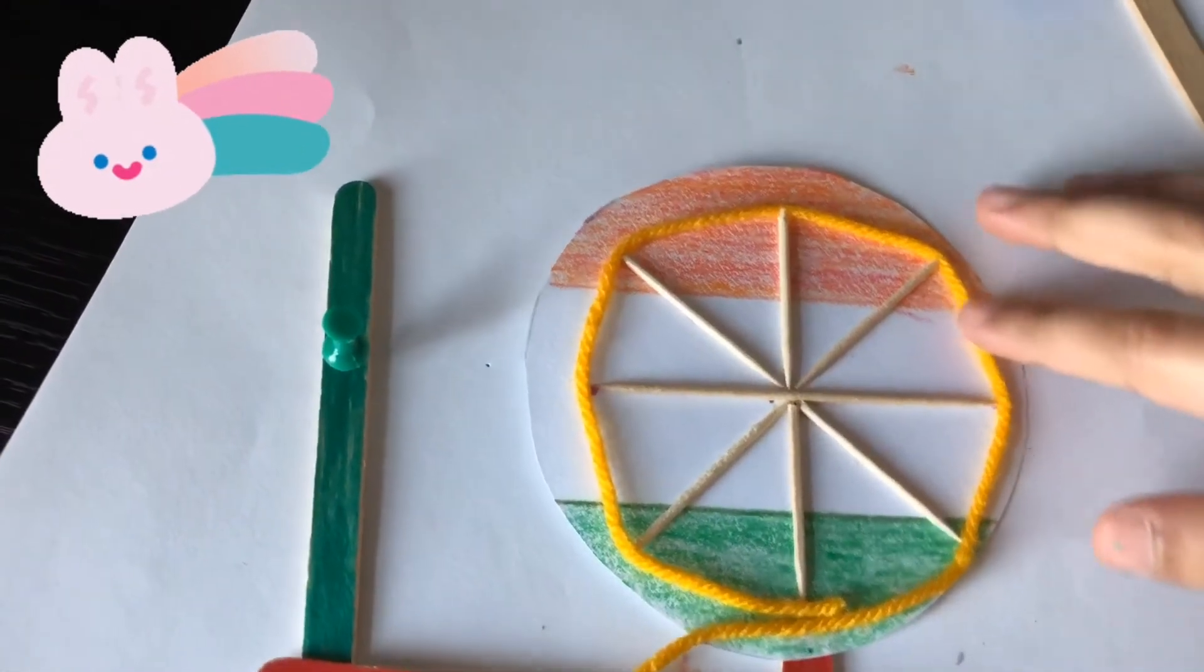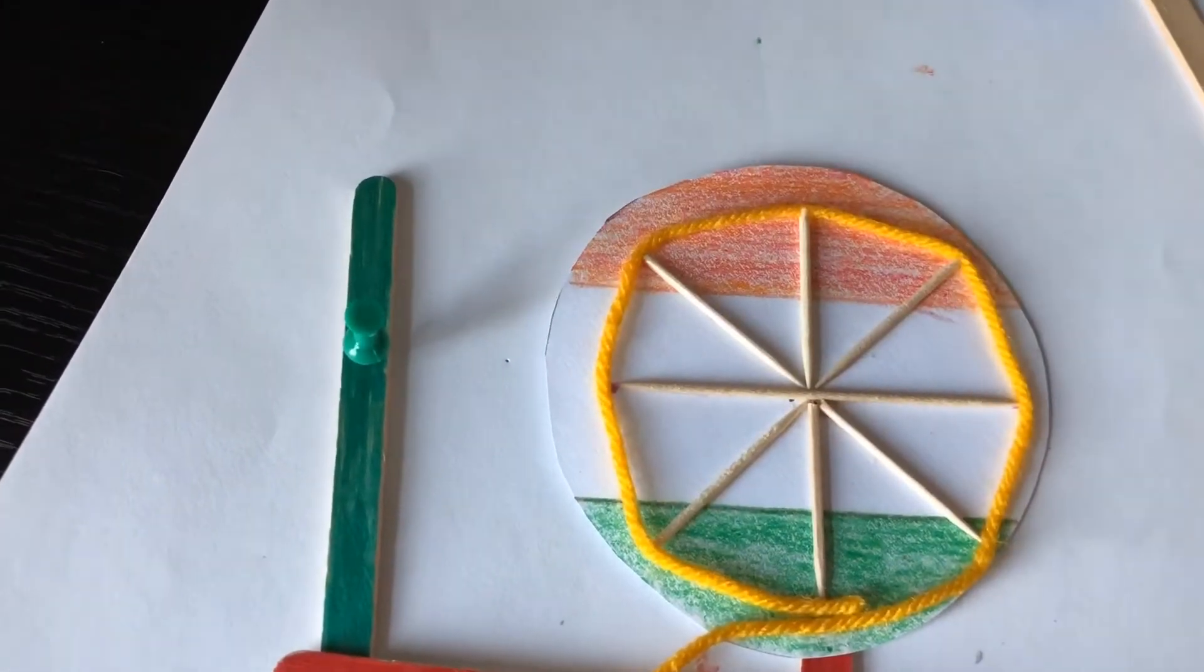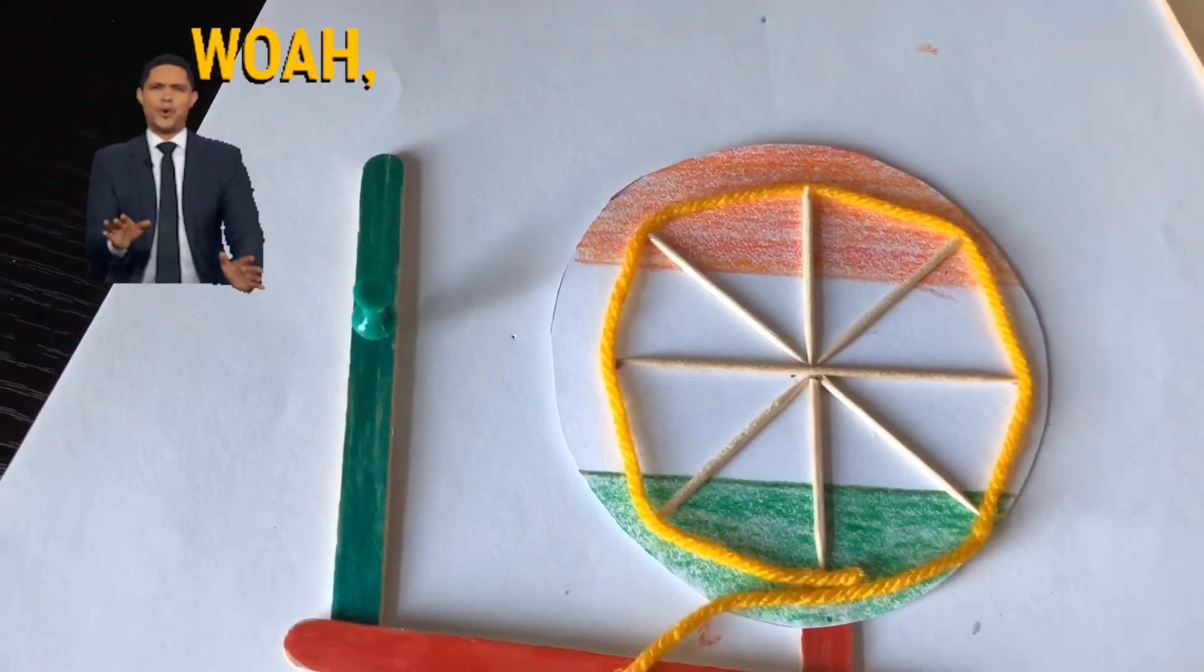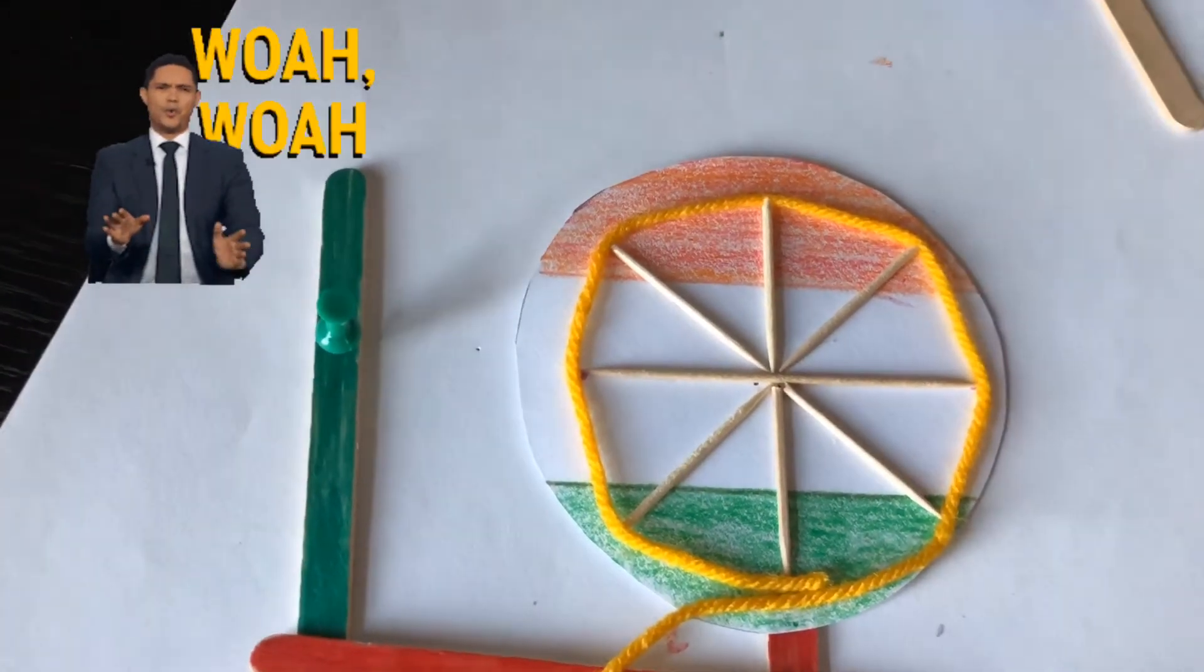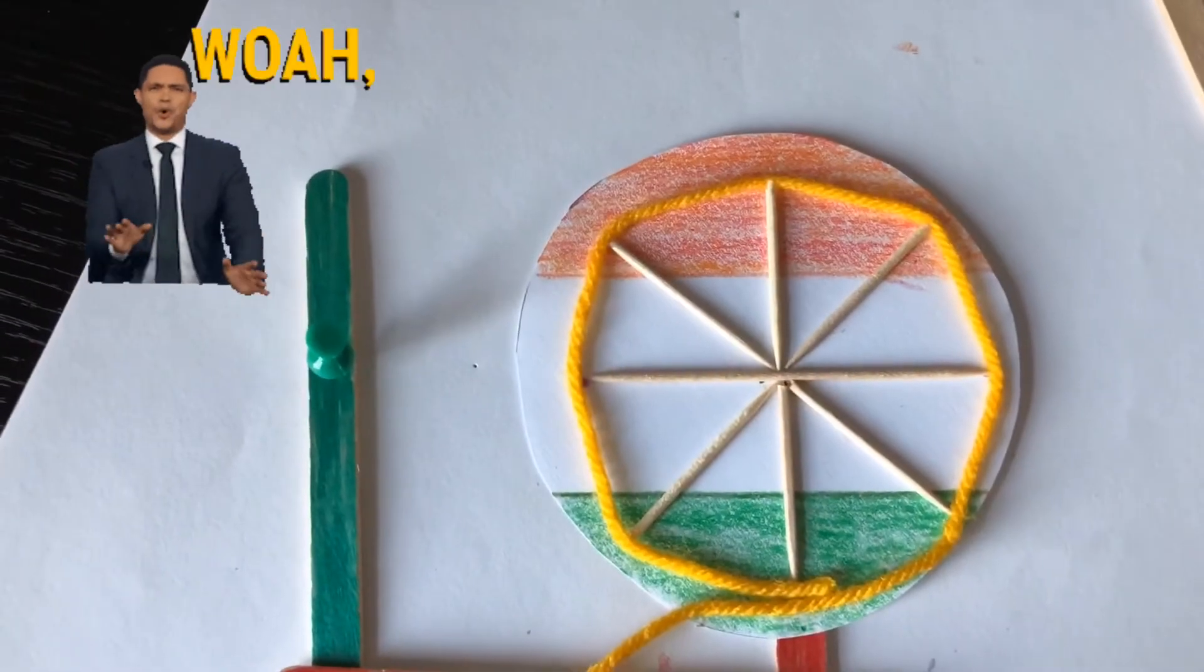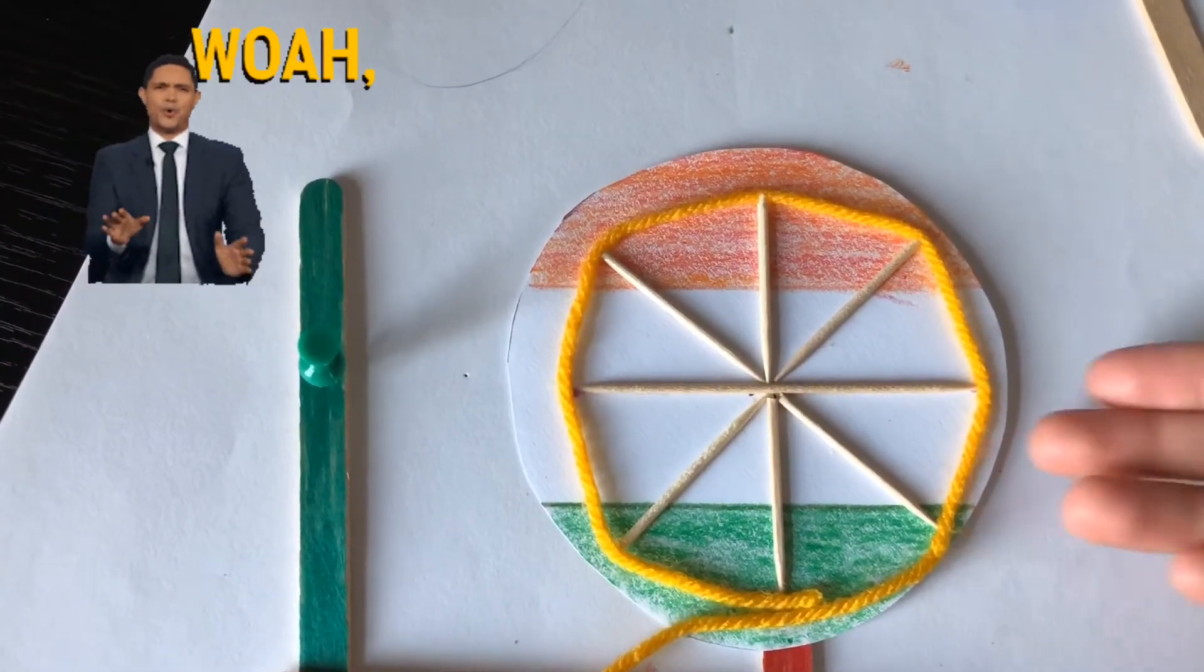First take a yarn then glue it around the snowflake like this. And it doesn't have to be a yarn but it can be anything you have. So this is how it looks like when it's done.